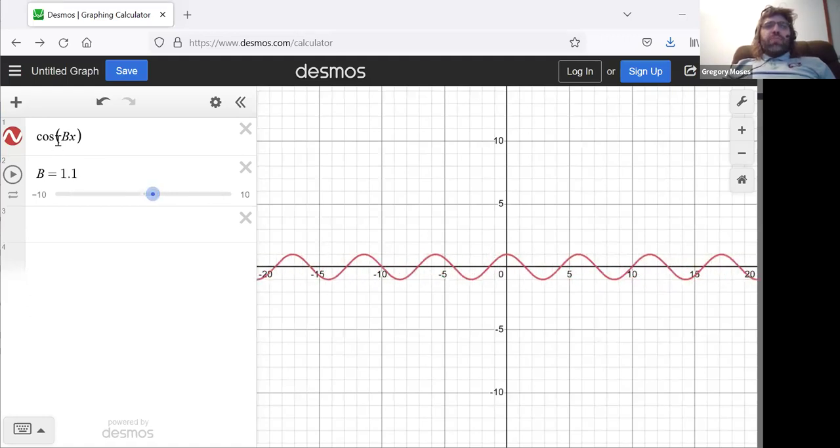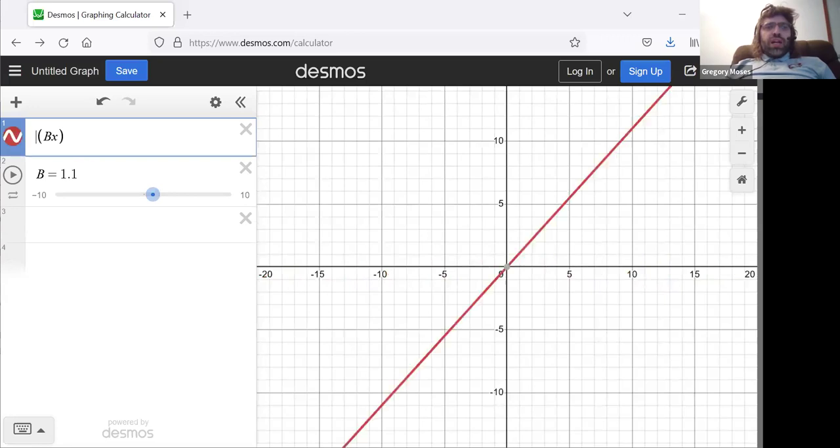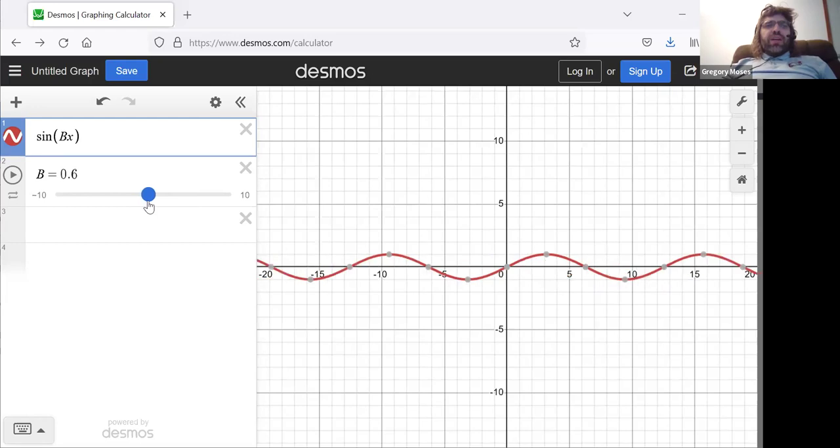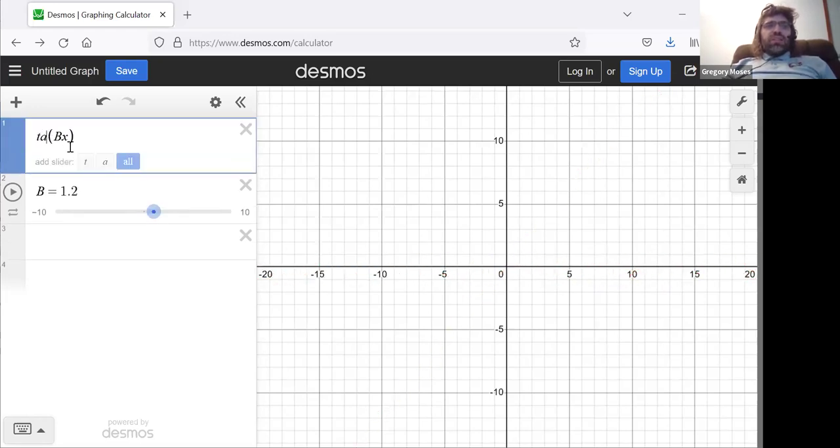And that's what B does to the cosine, and that's what B does to the sine, and we've seen now that it's what B does to the tangent.